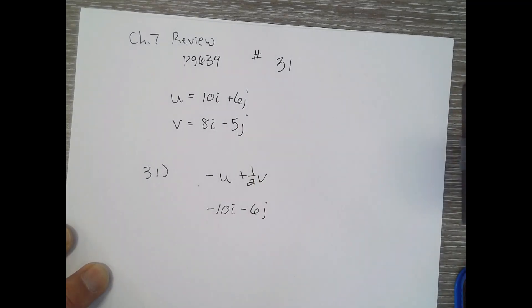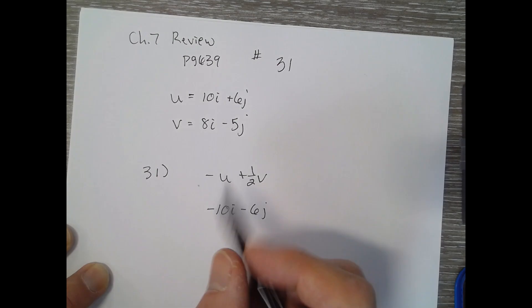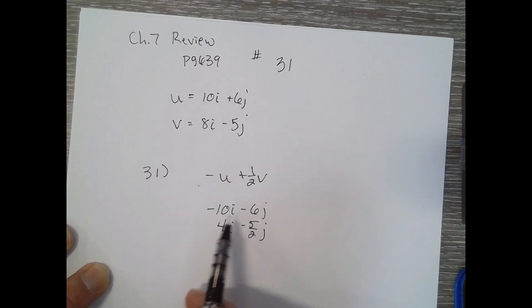And then one half V. So that's 4I minus 5 halves J. We're combining those two vectors.